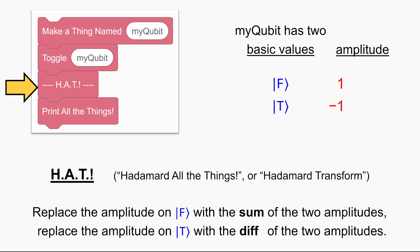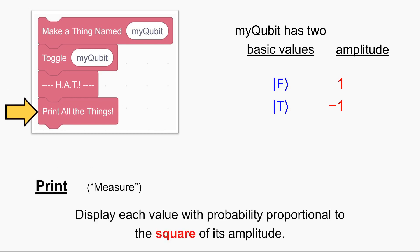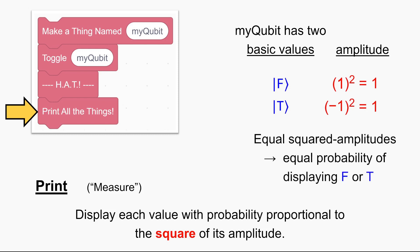Sounds weird, but that's the way it works. Finally we come to the print or measuring instruction. This works by displaying each value with probability proportional to the square of its amplitude. 1 squared is 1 and negative 1 squared is also 1. So again false and true have equal squared amplitudes — both 1 — and therefore false and true are displayed with equal probability, 50-50, just like in the previous version of the code without the toggle instruction.